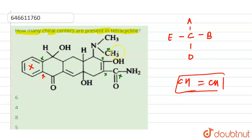This carbon is also not a chiral center because here we have three hydrogen substituents — same substituents attached. These carbons are all achiral either because of double bonds or because of identical substituents attached to them.